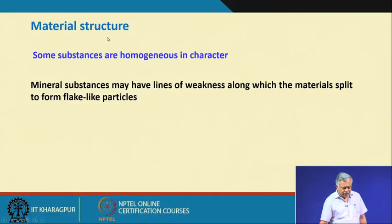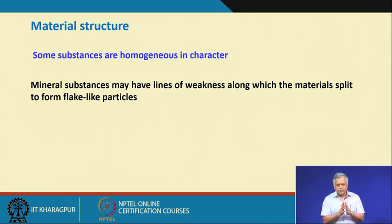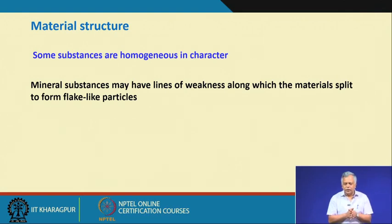Another property or characteristic of material is the material structure — the internal structure. As we discussed in the very first class, although graphite and diamond have identical chemical composition, their physical properties are different because it is the crystal structure which dictates the physical properties. Similarly, some substances are homogeneous in character — if I have a large piece of rock and it is homogeneous, I may get similar properties throughout. In that case, it is much easier to break it because I know exactly how much force is required.